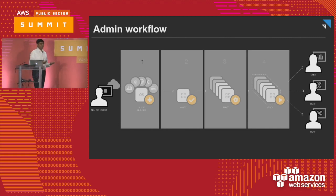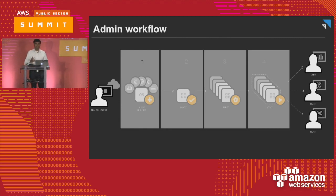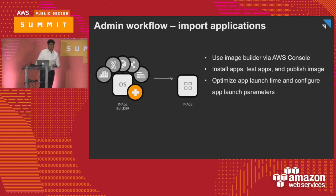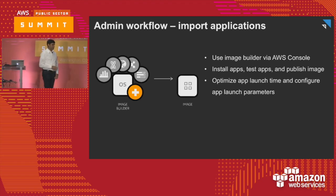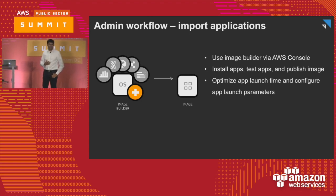First, customers ask: how do I get my applications in? For that, we have something called an image builder. Once you have an image, you set up your streaming environment and say how many users you'll have. An image builder is almost a regular Windows desktop — you get access to it through the browser. From within the AWS console, you click a button, launch the image builder, get a full admin desktop, and install your apps — something folks have done for tens of years. The image today is Server 2012 R2 based.